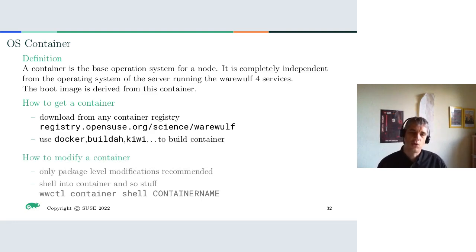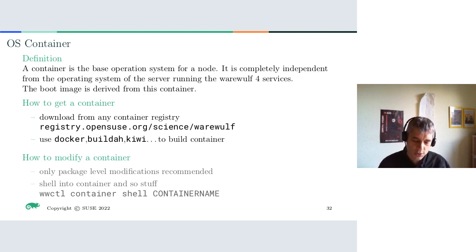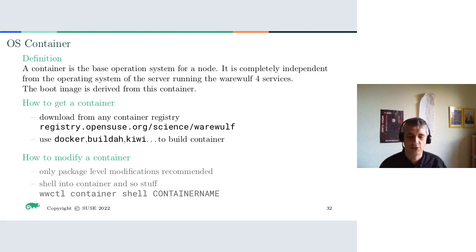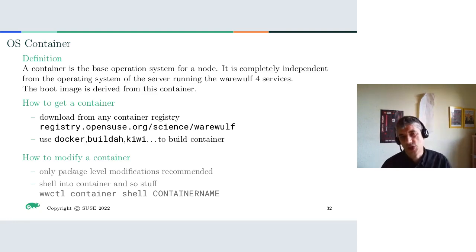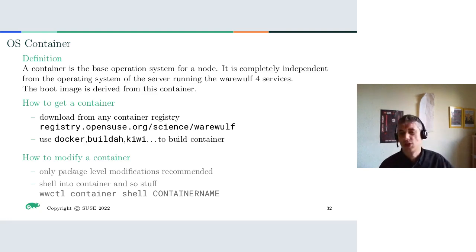Container modification: because it's a chroot image on your Warewolf host, you can still modify it. For example, when you pull a container from the registry there is no Nvidia driver on it. So you shell into the container, add the Nvidia repos, install the driver, shell back out, and the complete image is built. Then you push it and you have Nvidia support on all the nodes.